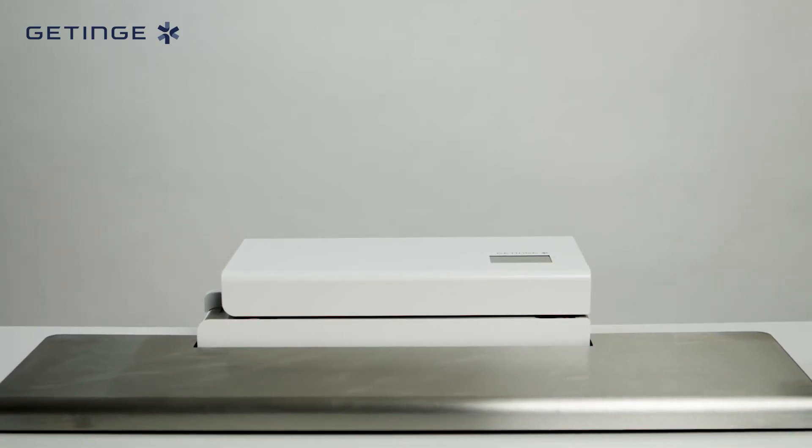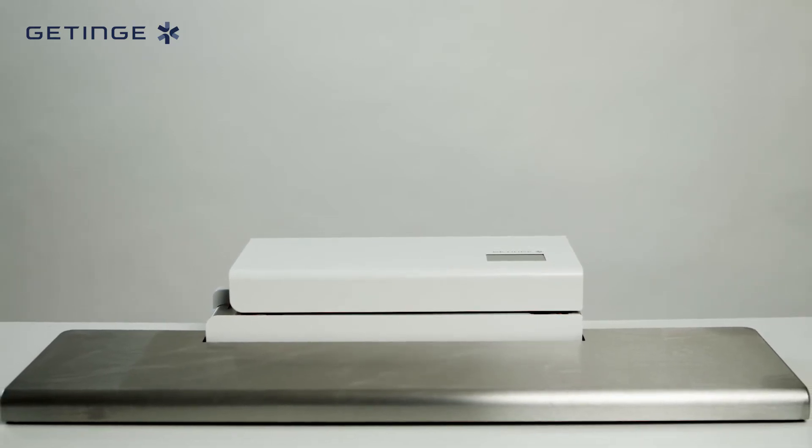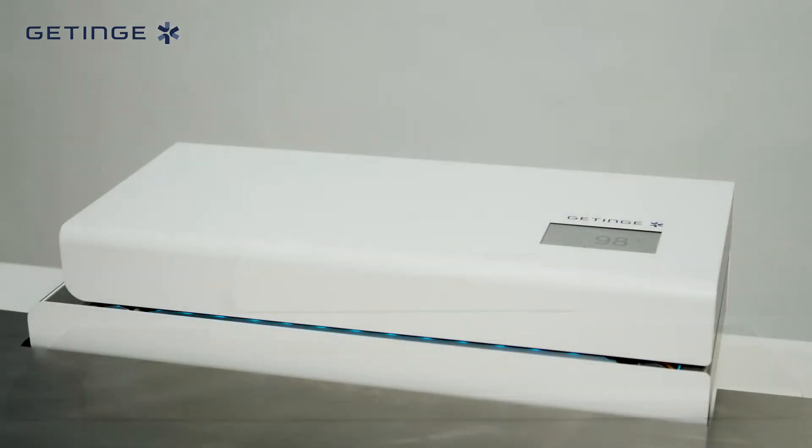Getinge ProSeal Plus and Premium Rotary sealers are designed for high-volume operations without sacrificing user-friendliness. The Premium model is equipped with three different blue light indicators for easy identification of the sealer status, even from a distance.